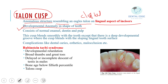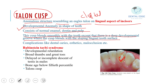The talon's cusp consists of normal enamel, dentine, and pulp. This cusp blends smoothly with the tooth, except there is a deep developmental groove where the cusp blends with the sloping lingual tooth surface. Due to this deep developmental groove, certain complications can arise: dental caries, aesthetic problems, and malocclusion. If required, we can treat it with prophylactic restoration.